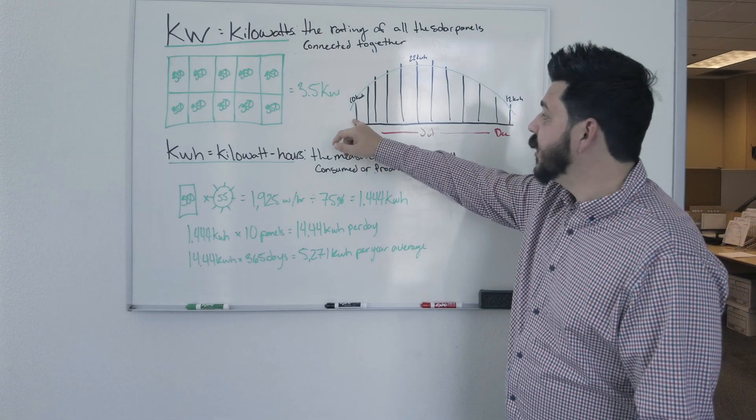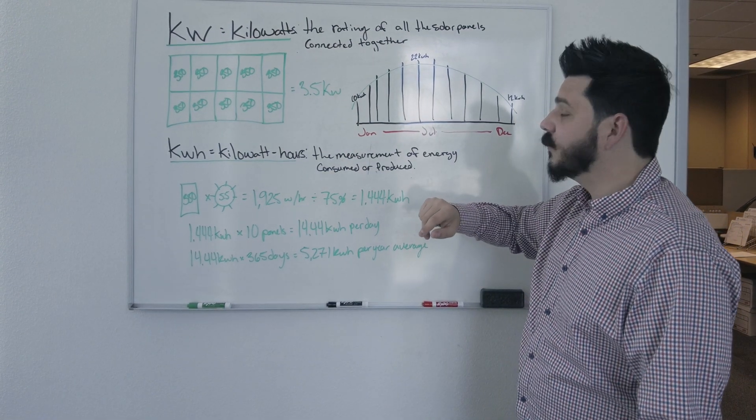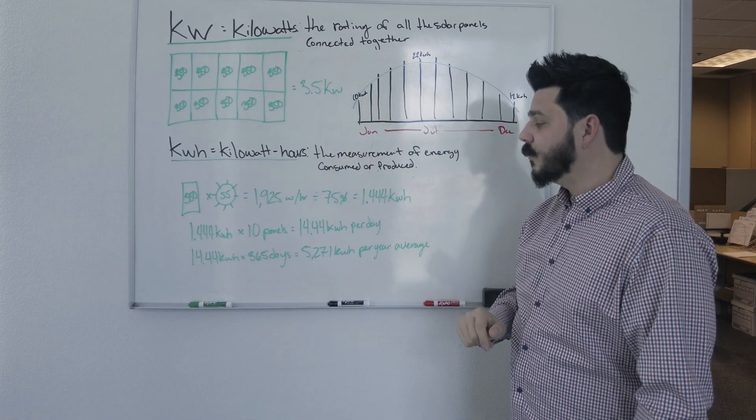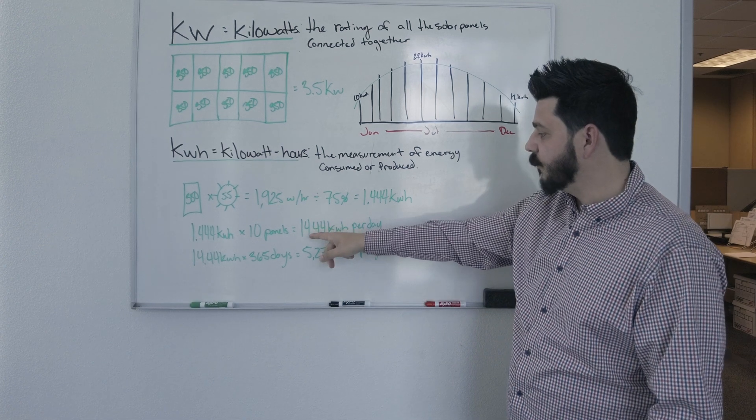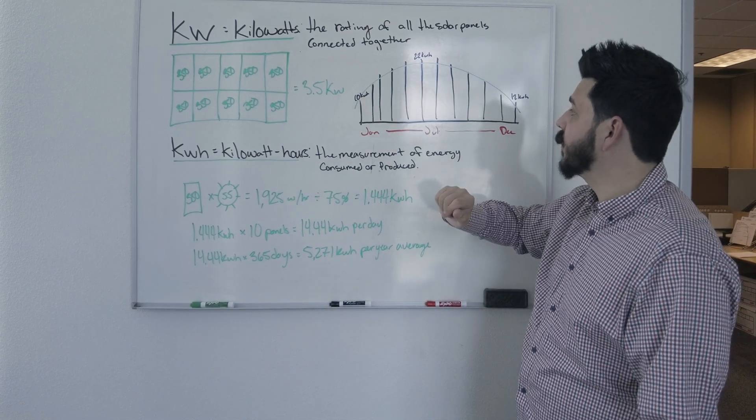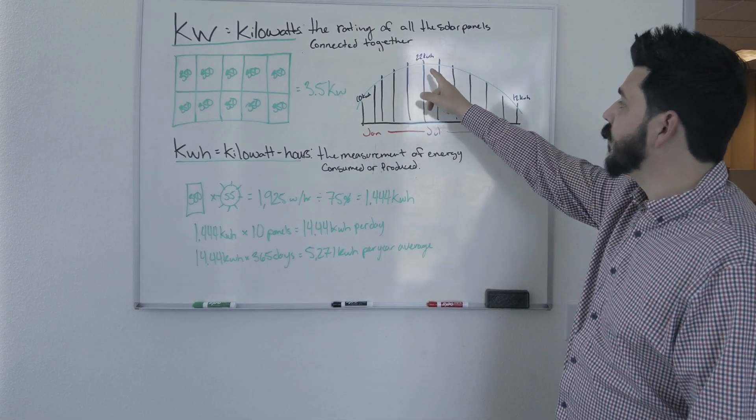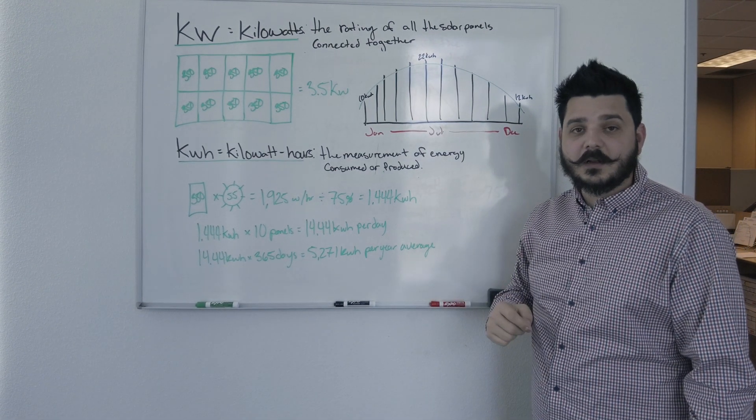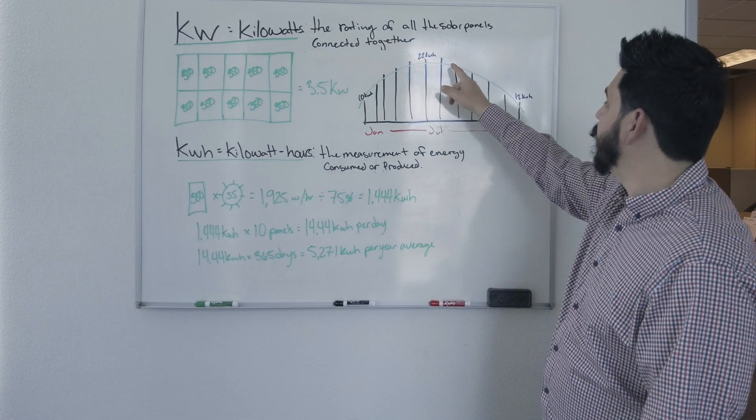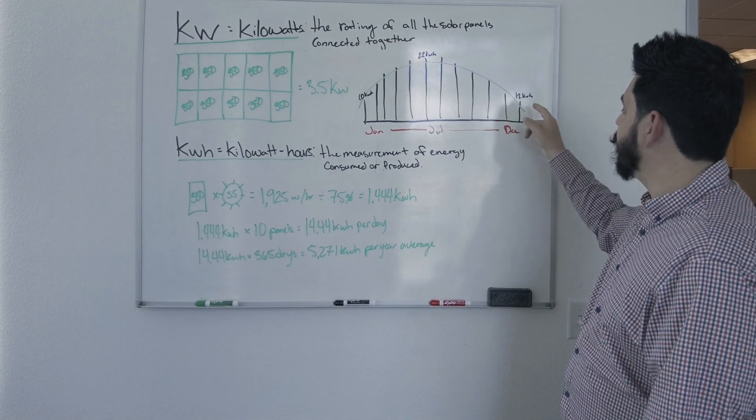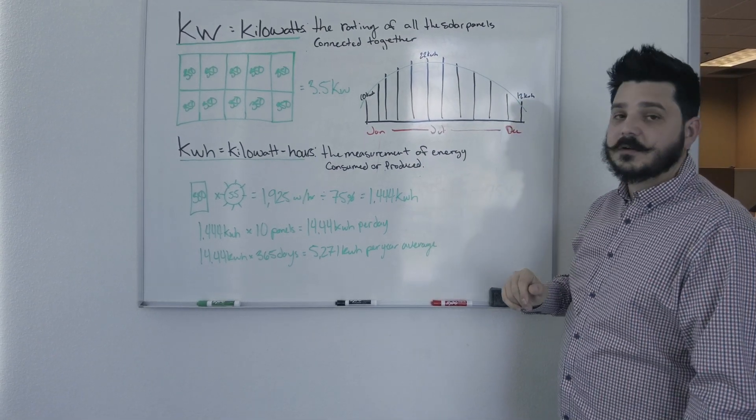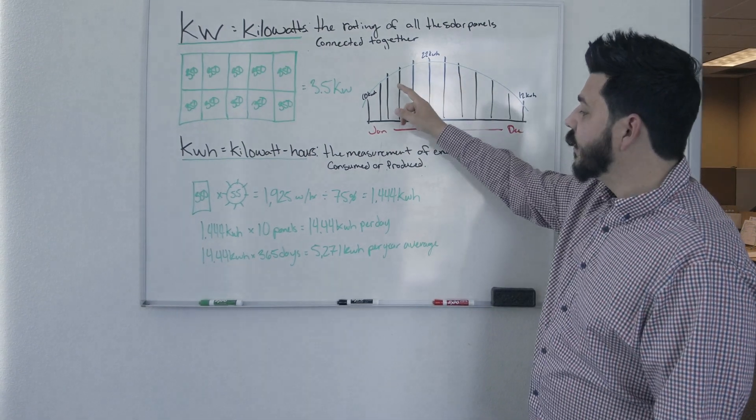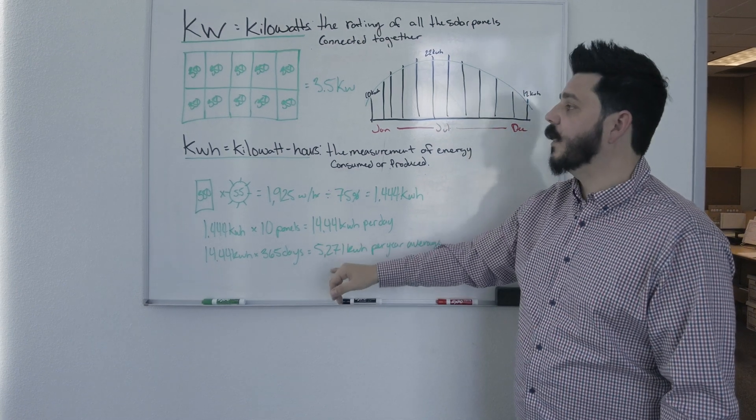So maybe in January, you don't have that good of an orientation tilt, so your solar system is only going to produce 10 kilowatt hours per day in total. As you get to the summer months, you have some great orientation and tilt, so your system's going to produce 22 kilowatt hours per day. We start to taper back down, and then in the winter months, maybe you're only producing 12 kilowatt hours per day. But this cycle helps you reach this annual kilowatt hours.